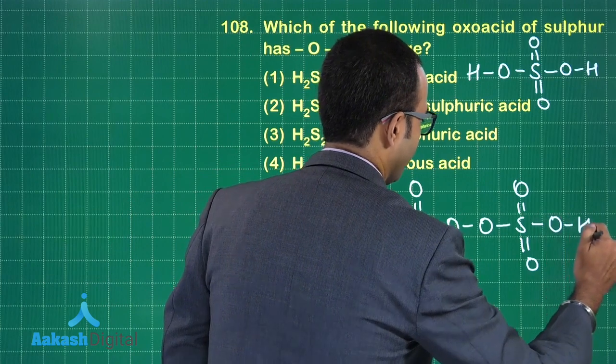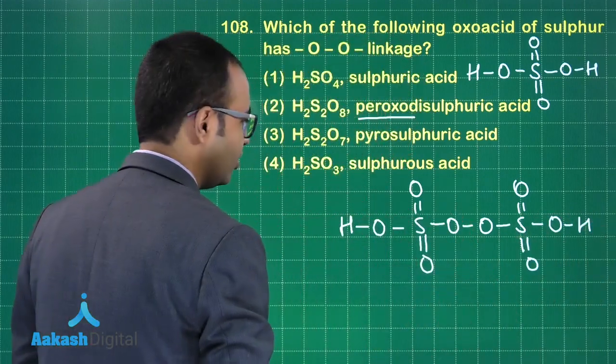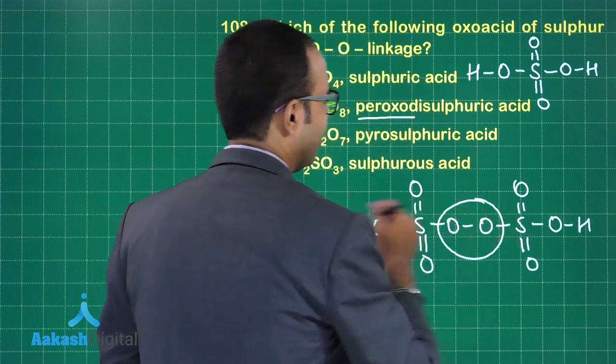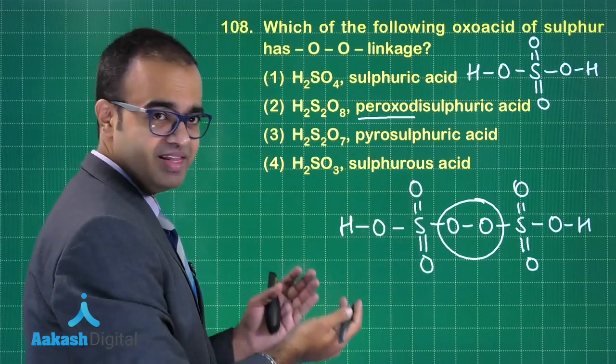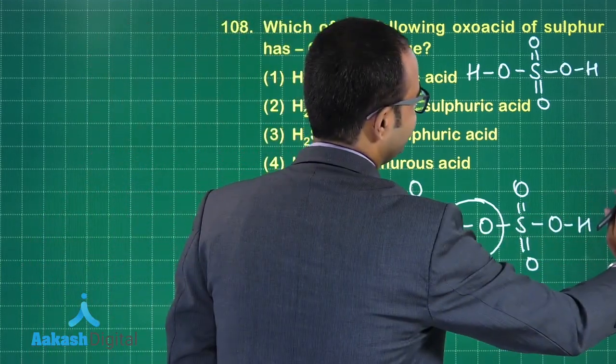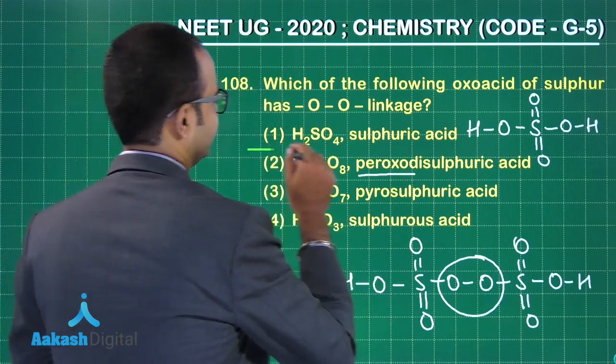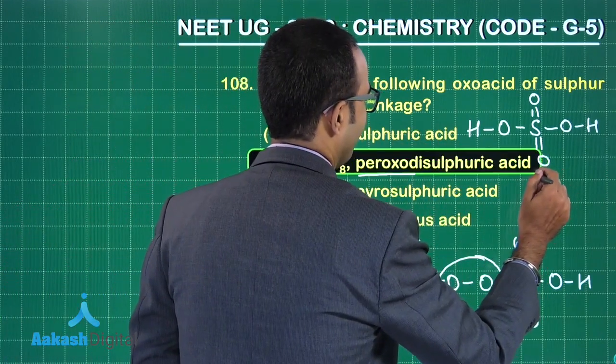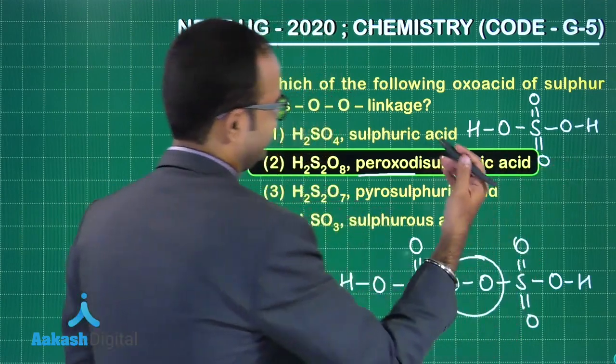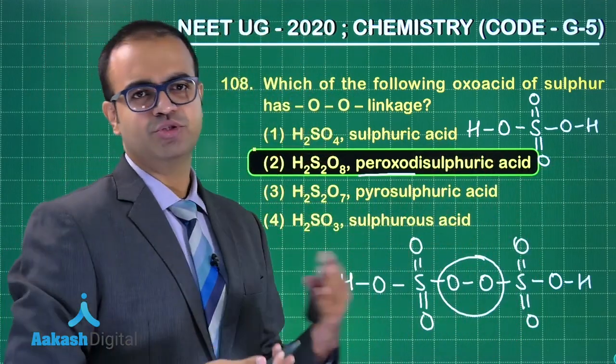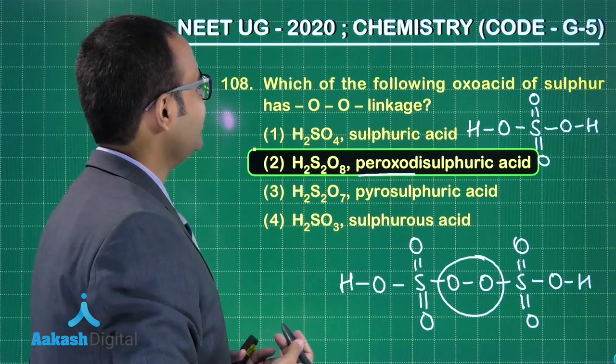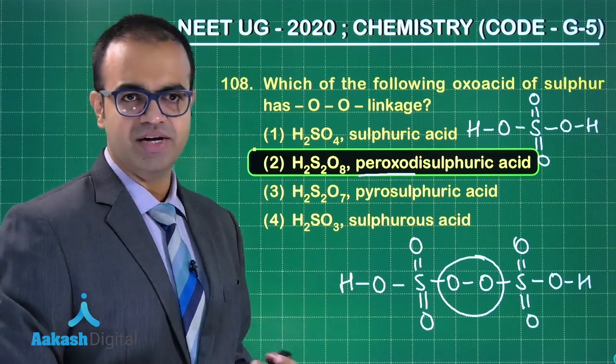And what do I see? A peroxo linkage over here. Yeah, peroxide linkage over here. Yes, so the answer is option two. I hope you have understood this. A very simple question. Just a fact you just have to know. Let us move on to the next question.